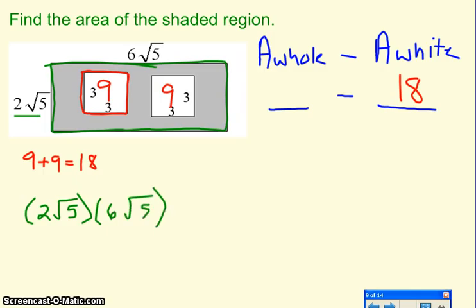So remember, the two and the six can multiply to become 12, because they're both outside the square root. The five and the five is the square root of 25. Well, the square root of 25 is five. Twelve times five is 60. So the area of the whole thing is 60.